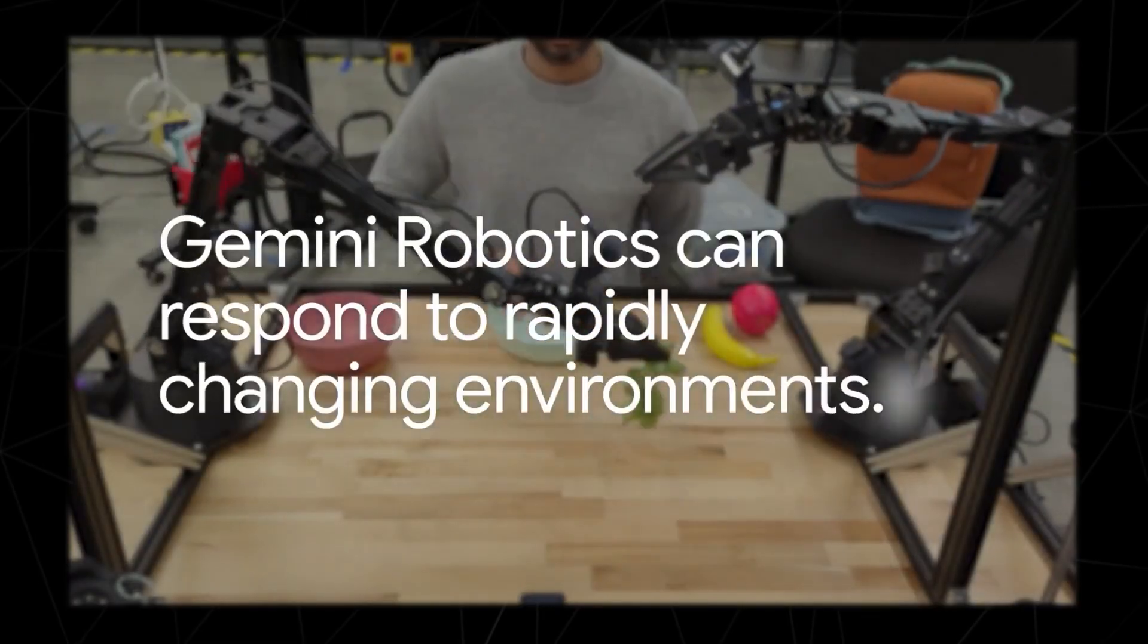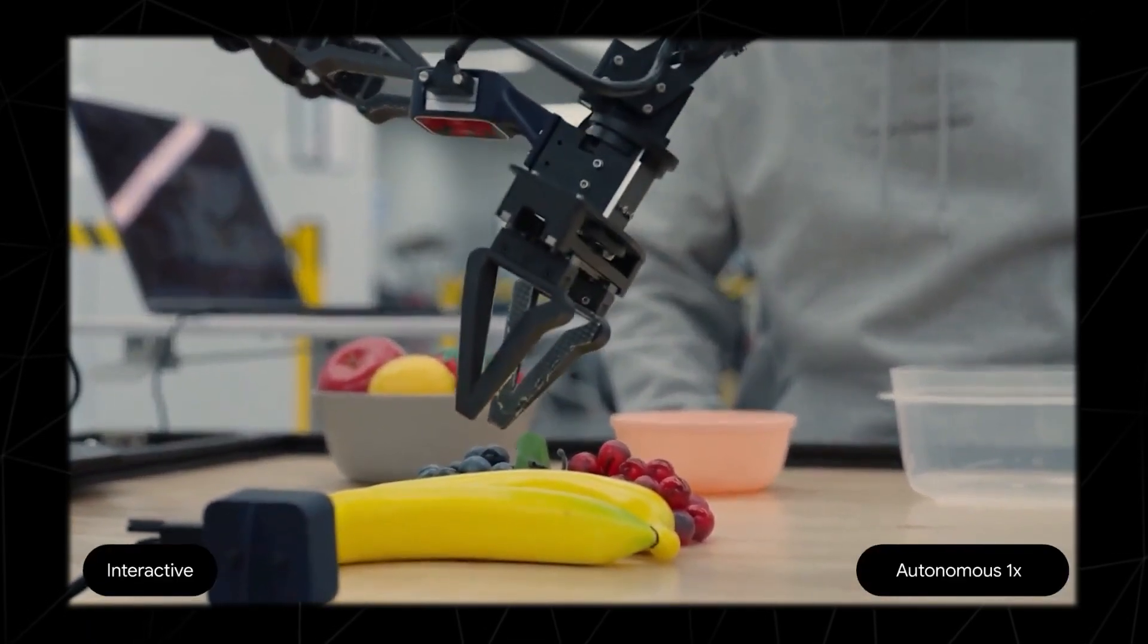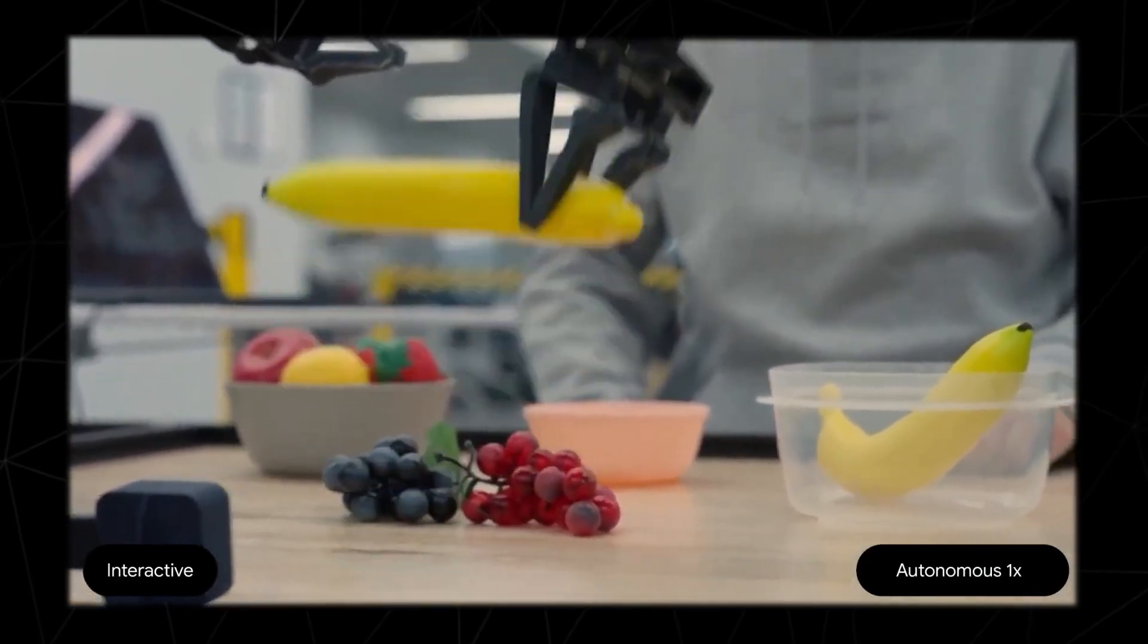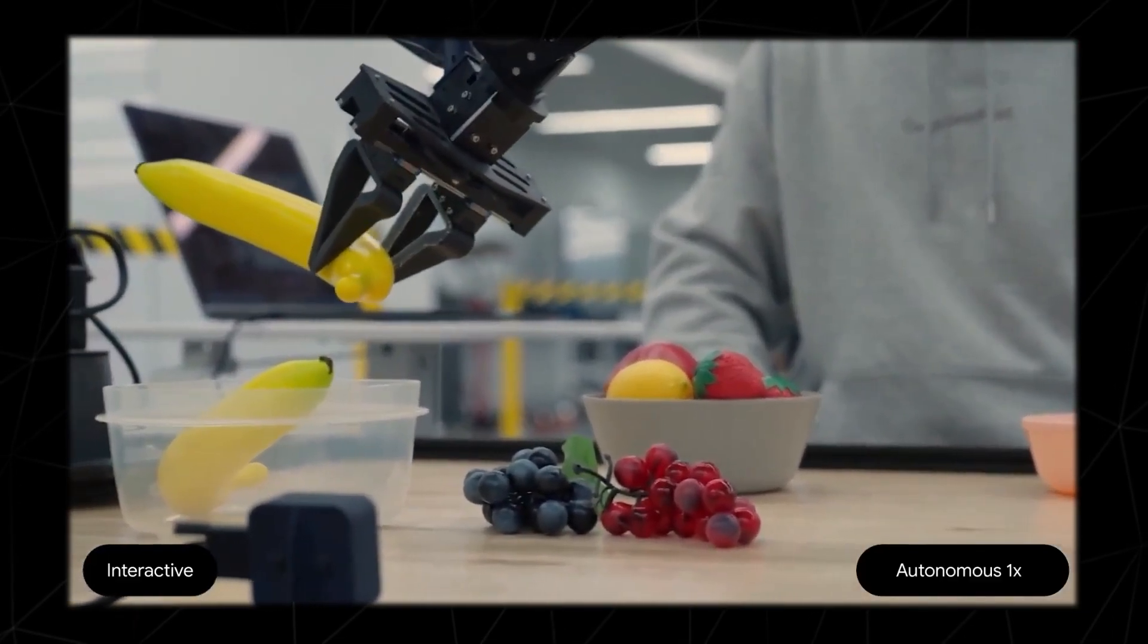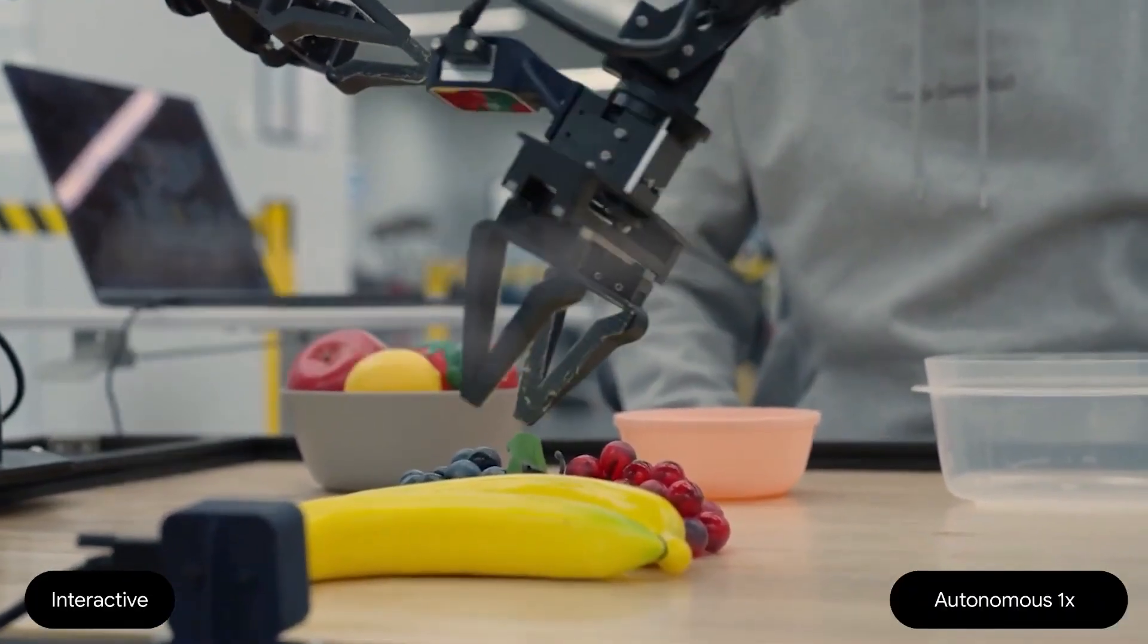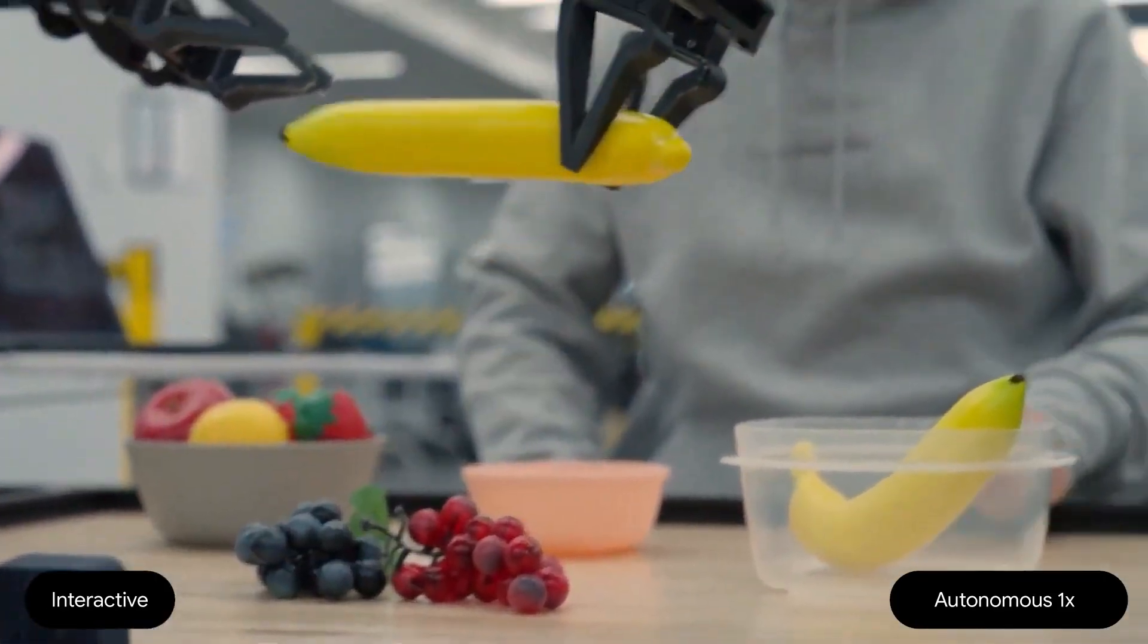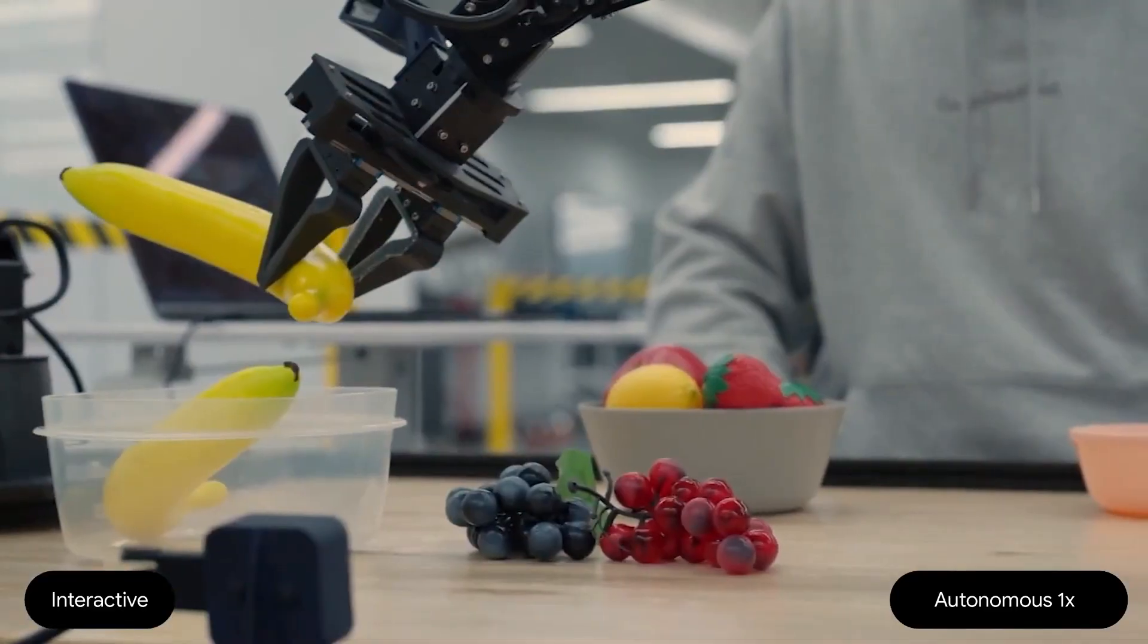The latest interactive update shows these robots adapting to dynamic environments in real time. Picture a human moving objects around or altering a workspace. The robot continuously processes these changes and adjusts its behavior to accomplish its goals. This is critical because the real world is never static. Everything around us is in flux. The robot's ability to navigate such changes in real time at near human speed is a huge milestone. It suggests that robotics is edging closer to the kind of situational awareness we expect in daily life. Can you put the bananas in the clear container?